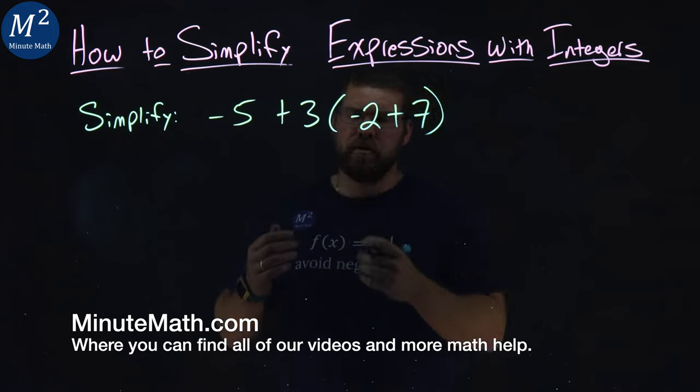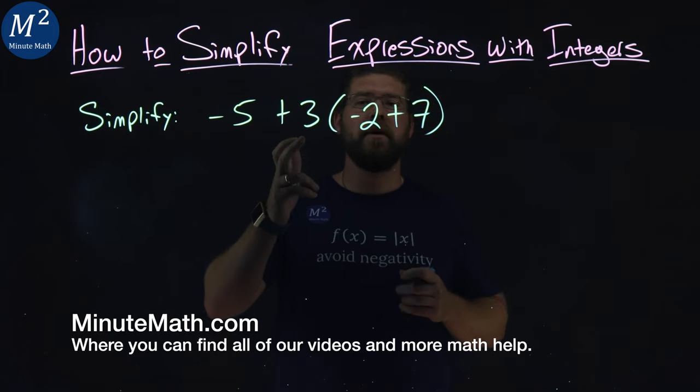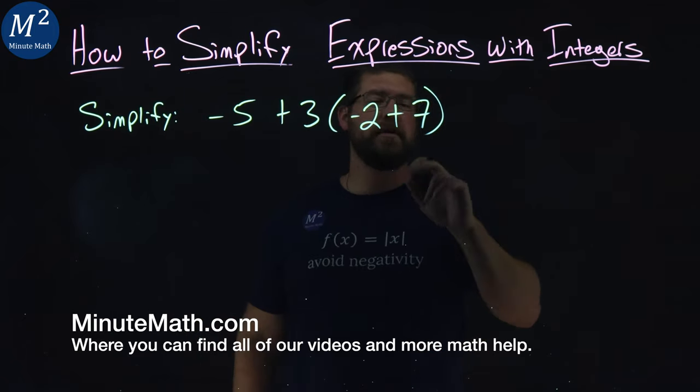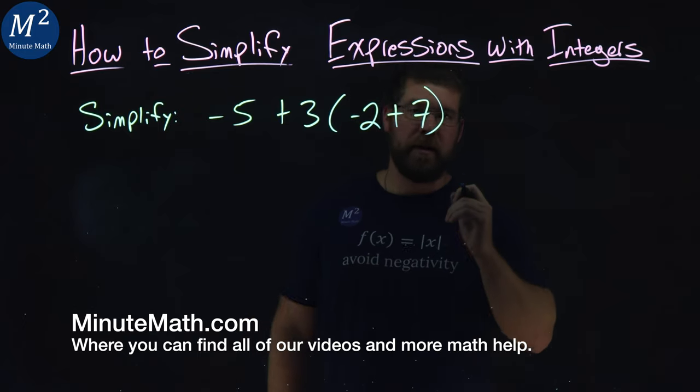We're given this larger expression: negative 5 plus 3 times, in parentheses, negative 2 plus 7, and we need to simplify this expression.